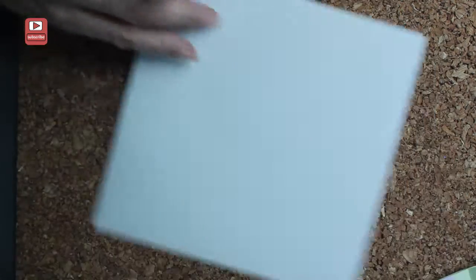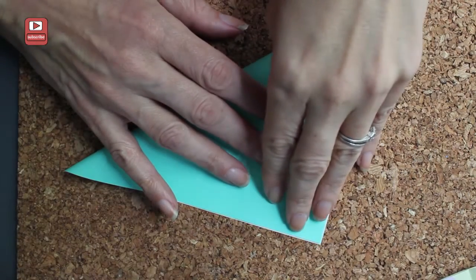Origami goat. Alright, take a piece of origami paper, fold it in half diagonally.